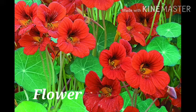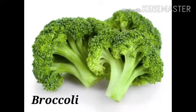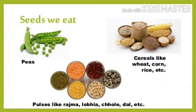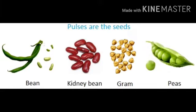Now considering the flowers of the plants that we consume: cauliflower, broccoli, etc. Not only that, we also consume seeds of plants. Seeds like cereals, which includes wheat and rice, while pulses which includes kidney beans, gram, beans, etc.